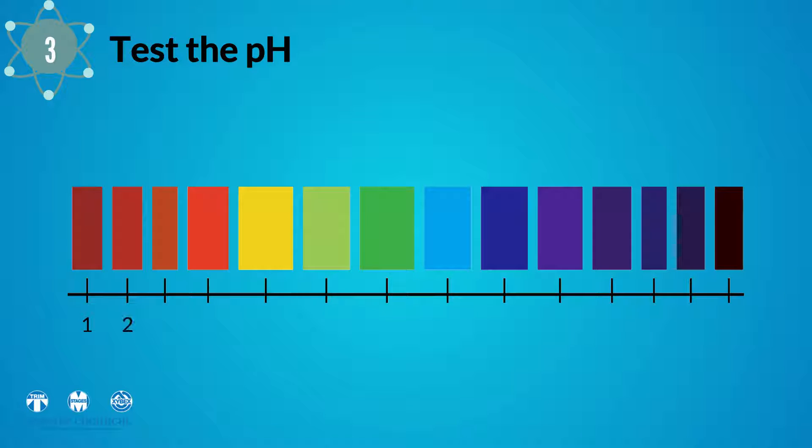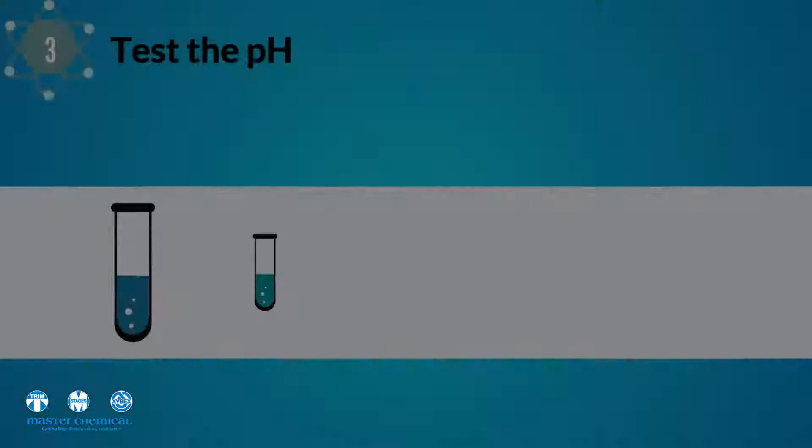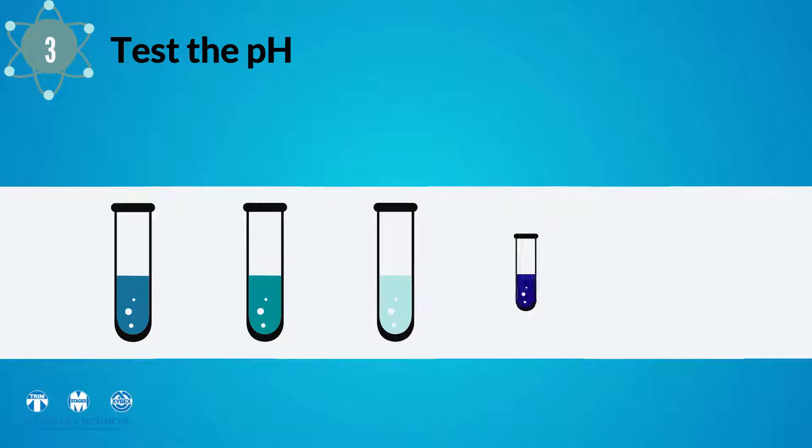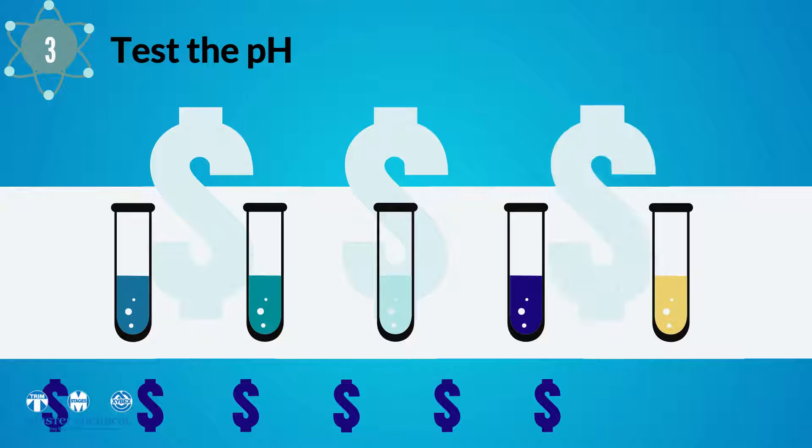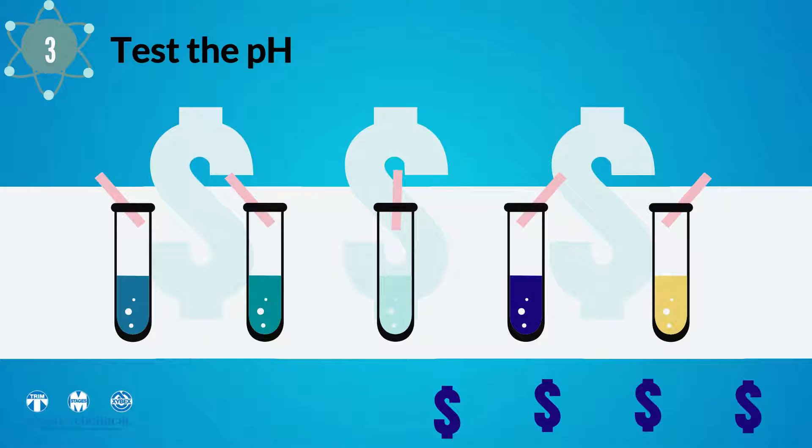Third, test the pH. While checking the concentration, don't forget to test the pH. pH measures how acidic or basic the metalworking fluid is. A change in pH or a pH out of range for your coolant is an early sign of potential problems, such as biogrowth. Proactive treatment can prevent a costly clean-out. pH test strips are a quick and easy way to identify the pH in your fluid.